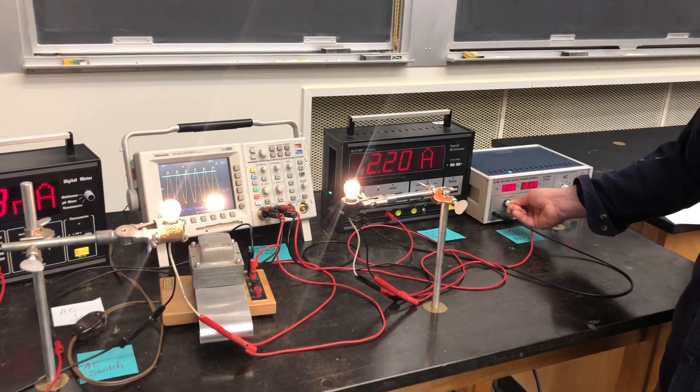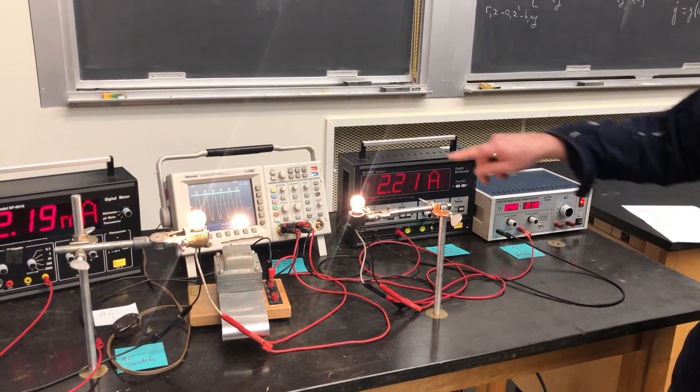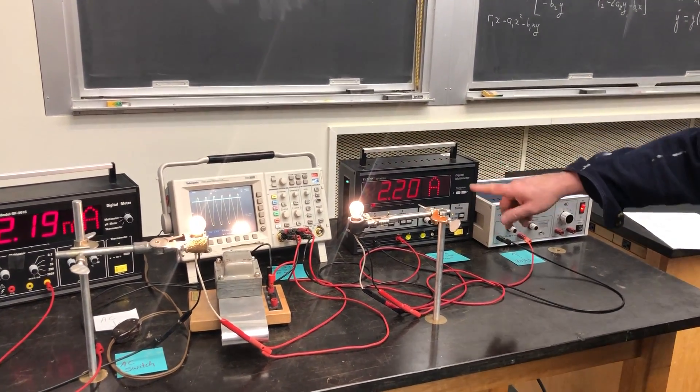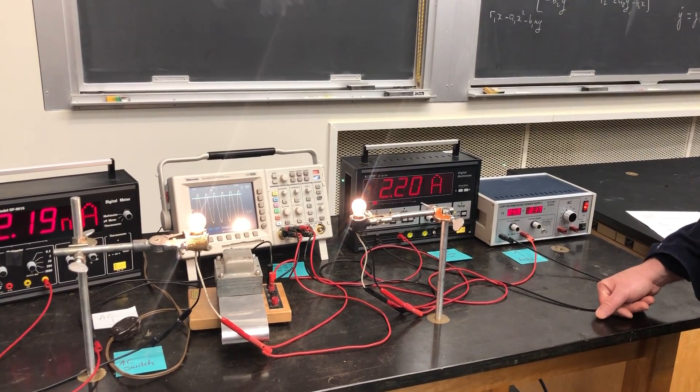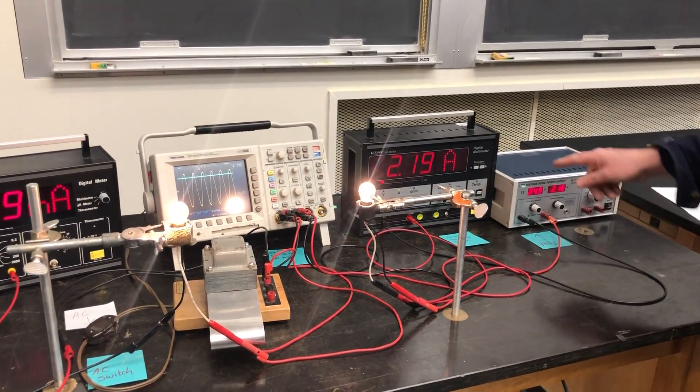And there it is. There's the DC RMS equivalent of AC. That is, I'm using 0.707 of the peak AC voltage to power it with DC.